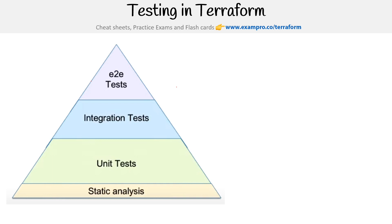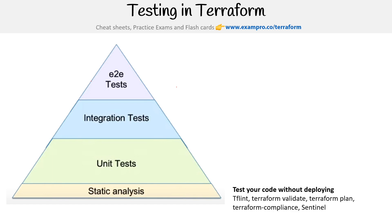At the bottom we have static analysis. This is where you test your code without deploying, and you've been doing it all along — when you do Terraform validate, Terraform plan, or use Sentinel, you're doing static analysis. That just means we're testing the composition or the shape of our code, or its outputs versus what it says it should be doing. But you can't catch all your problems there.